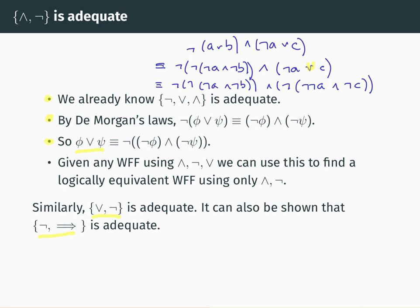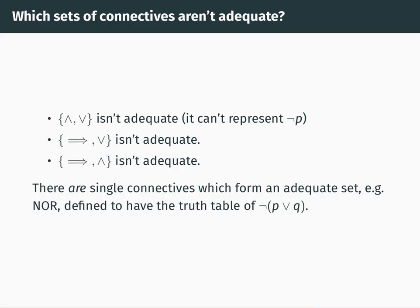So there are various different sets of connectives which are adequate, which raises the question: which sets are NOT adequate? It's fairly easy to convince yourself that some simple sets aren't adequate, such as just AND and OR on their own. You can prove this by showing it can't represent NOT P — there is no well-formed formula just using AND and OR which is logically equivalent to NOT P. The proof uses the fact that if all variables are made true in any formula using only AND and OR, then the whole formula is true, which is a property that NOT P does not have.